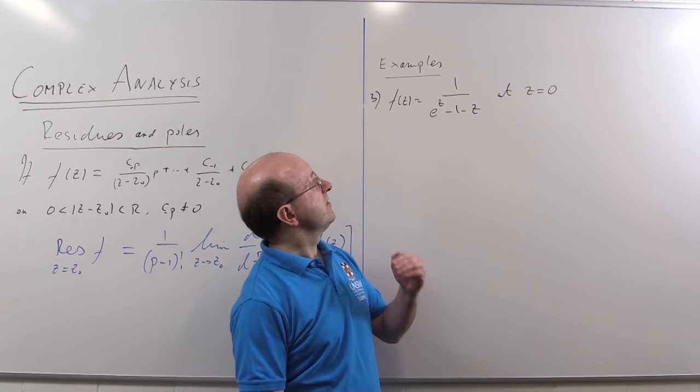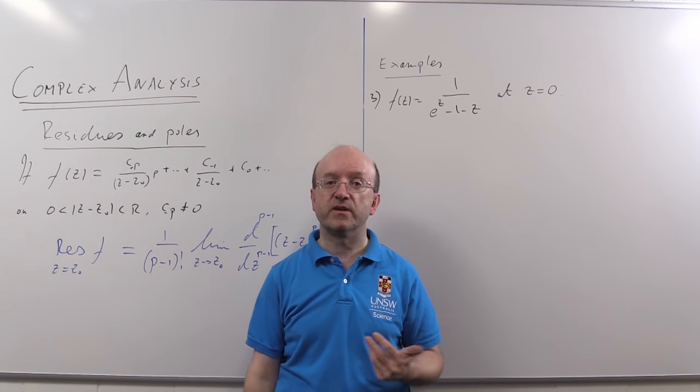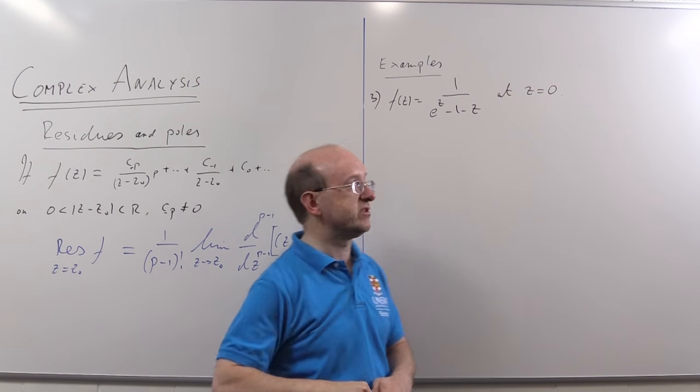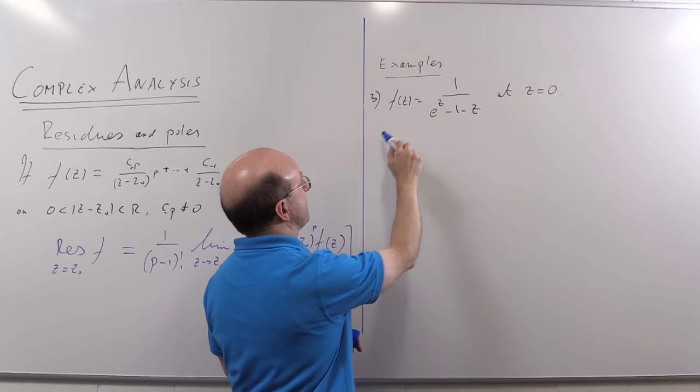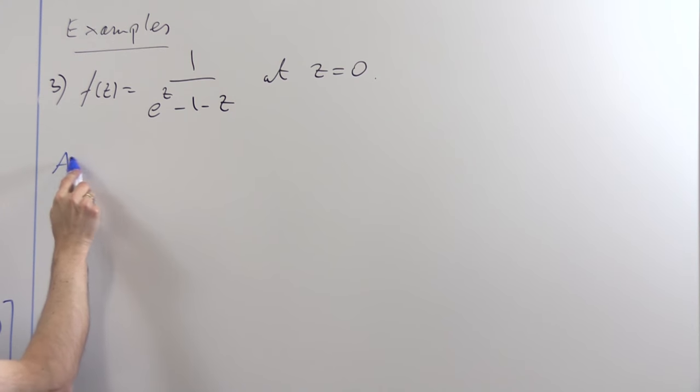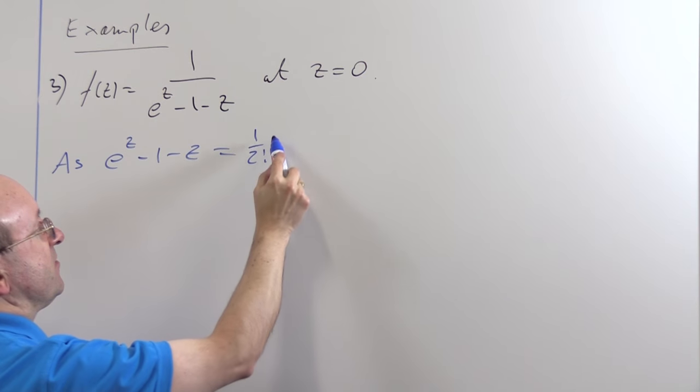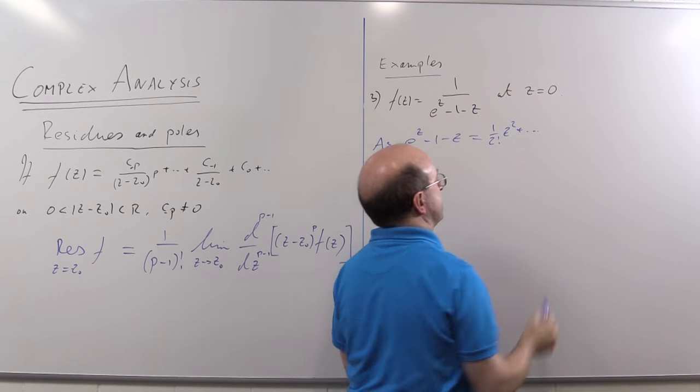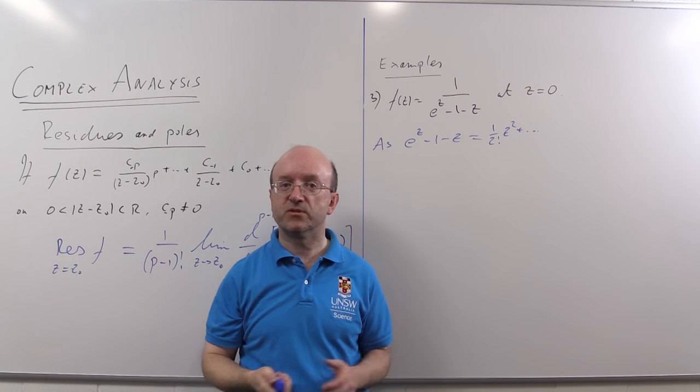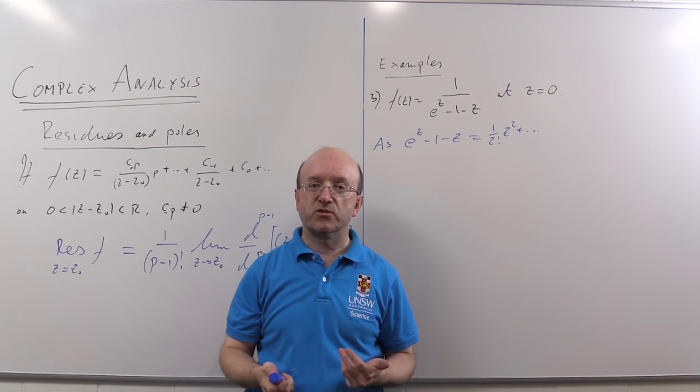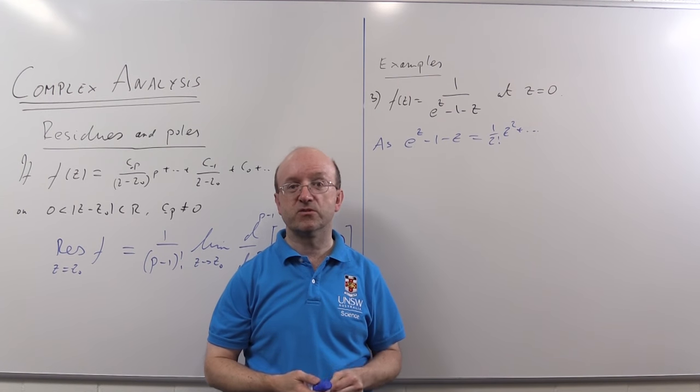Now, in this third and last example, we're going to be looking at 1 upon E to the Z minus 1 minus Z. That has a pole of order 2 at Z equals 0. And we can see that because we can write down E to the Z minus 1 minus Z. Its series around Z equals 0 begins with the Z squared. It begins 1 upon 2 factorial Z squared plus. The first two terms of the E to the Z series are cancelled off. So we've got a zero of order 2. 1 over the zero of order 2 is a pole of order 2.